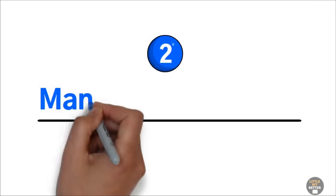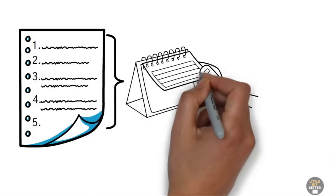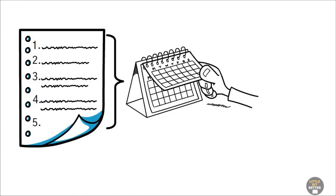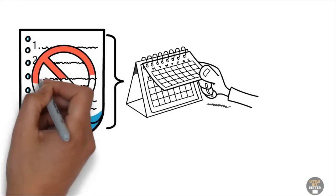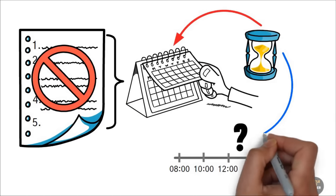Number two, managing your time. If you're like me, time management means looking at your to-do list and planning how to complete those tasks in the coming days or weeks. Effective people don't start with their tasks. They start with their time. Not planning it, but by tracking where it actually goes.